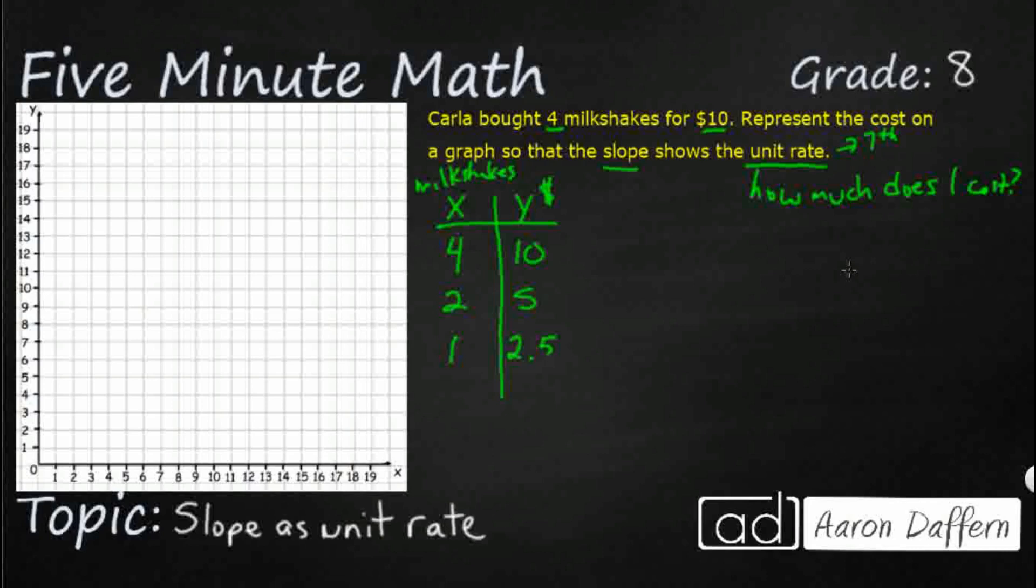And if I really wanted to, I could double this four, I can get that up to eight, up to 20. But then I'm basically falling off my graph here. So this right here is my unit rate.